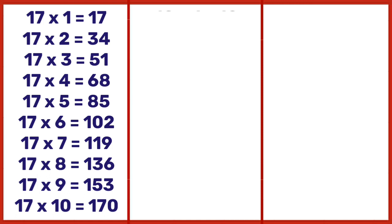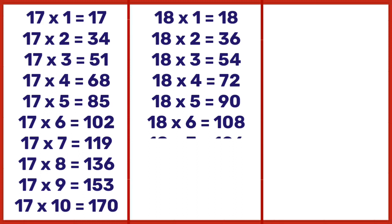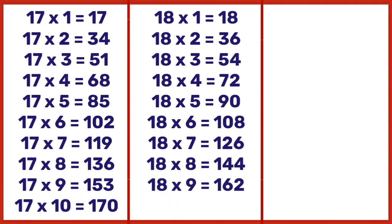18 times 1 is 18, 18 times 2 is 36, 18 times 3 is 54, 18 times 4 is 72, 18 times 5 is 90, 18 times 6 is 108, 18 times 7 is 126, 18 times 8 is 144, 18 times 9 is 162, 18 times 10 is 180.